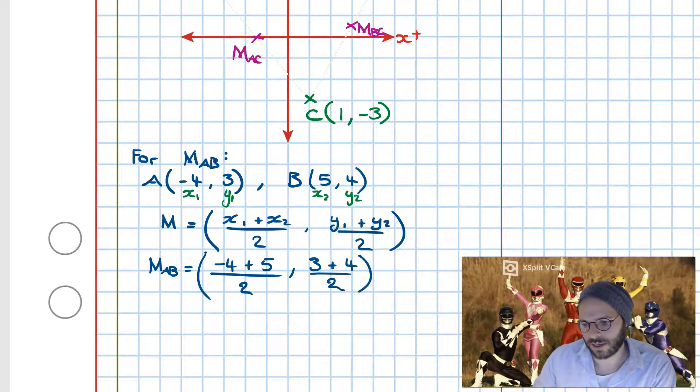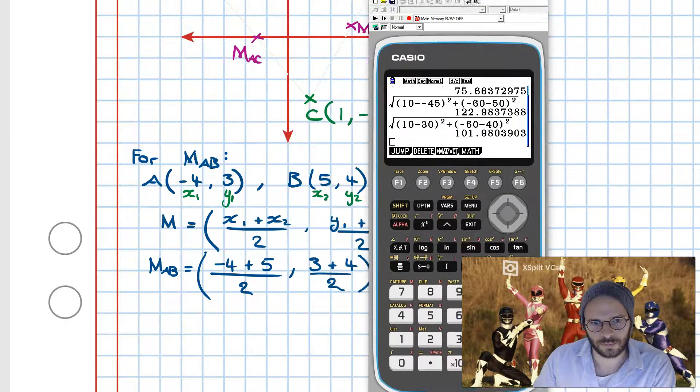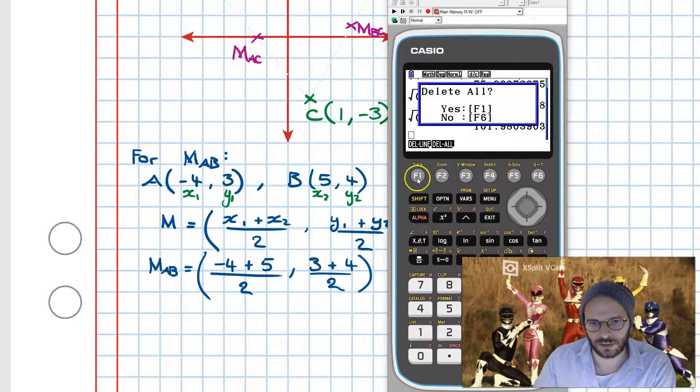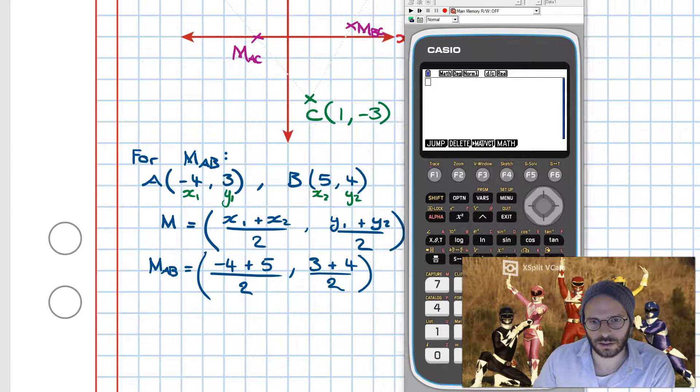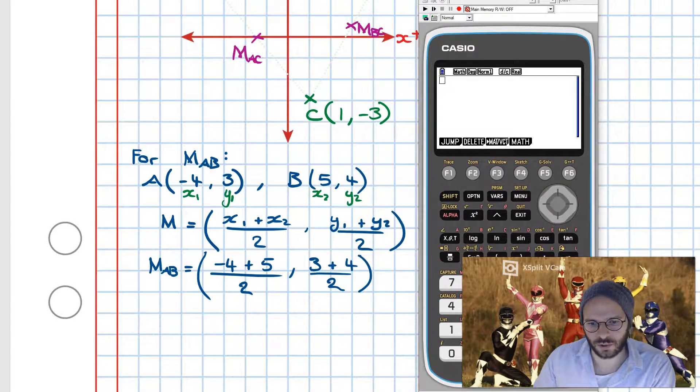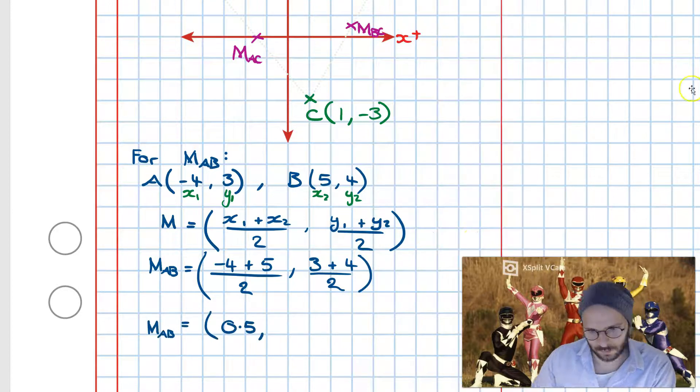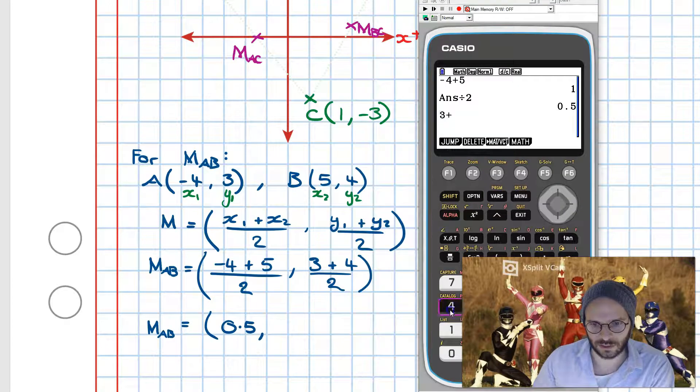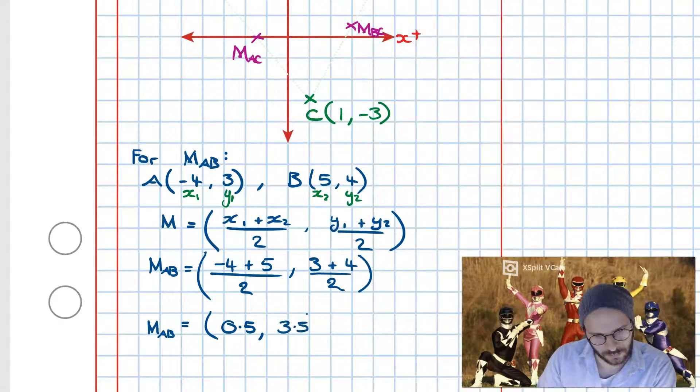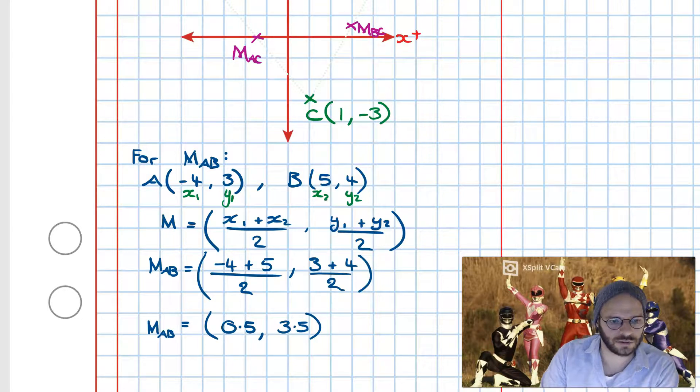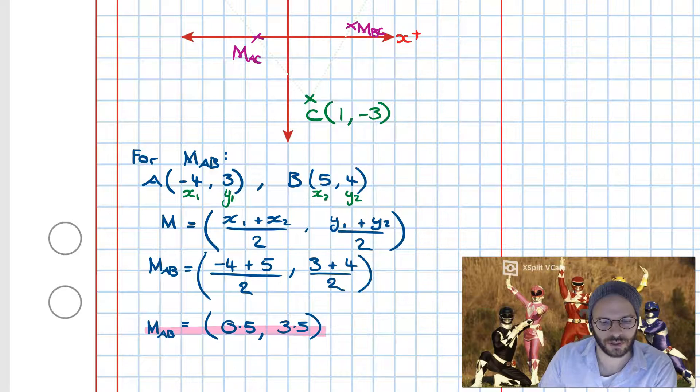Step after that, I simply bring up my calculator and I'll clear the memory just for good sake, and then I'll put in the first coordinates. So minus 4 plus 5 divided by 2, and that's a half. Next one is 3 plus 4 gives us 7, divided by 2, that gives us 3.5. And thus the answer for this solution is the midpoint of A, B is 0.5 and 3.5.